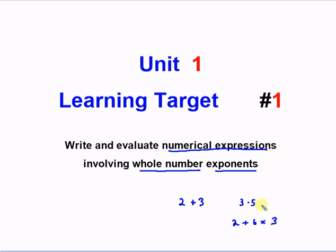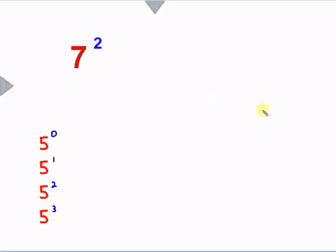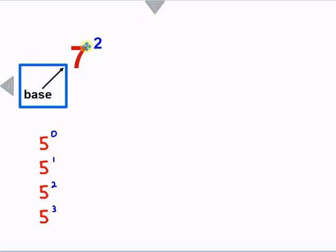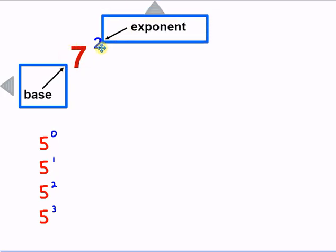Whole numbers are any of our numbers that aren't decimals or fractions. Involving whole numbers and exponents is what we'll talk about next. In this case we have an exponent here, and we have two different things: we have a base, which is our number here, and then the exponent that we're going to deal with.